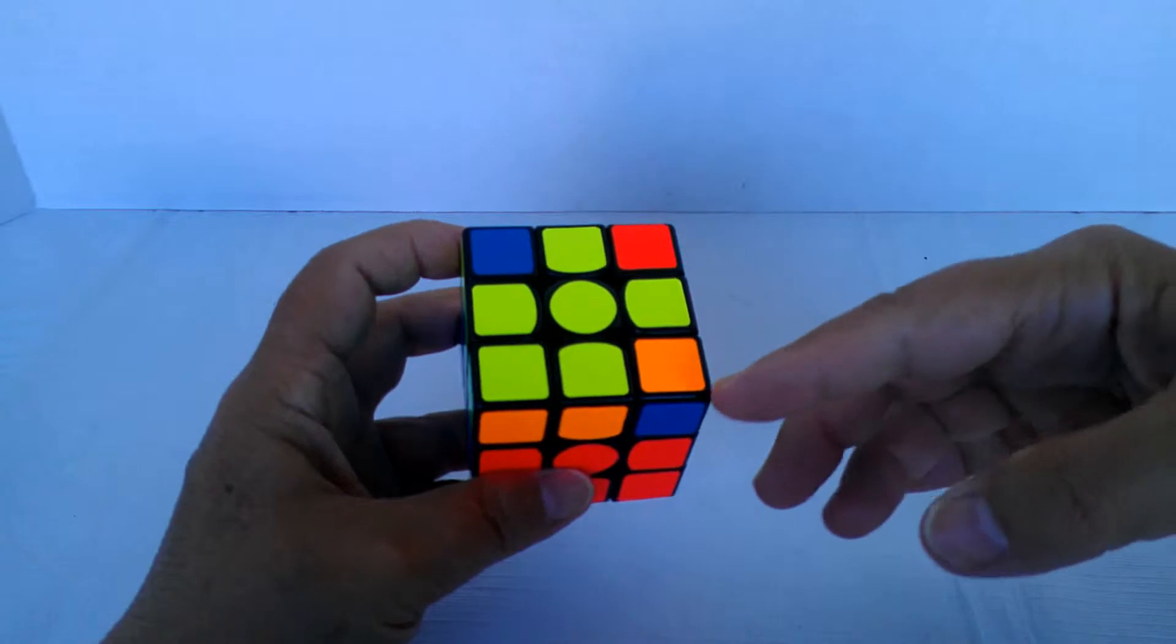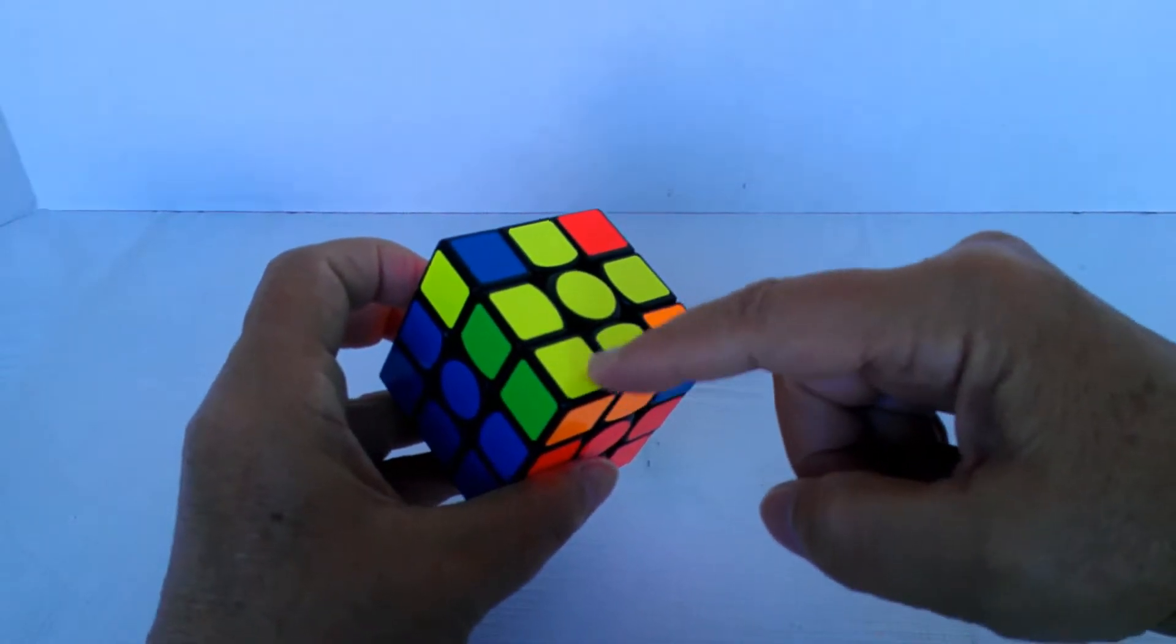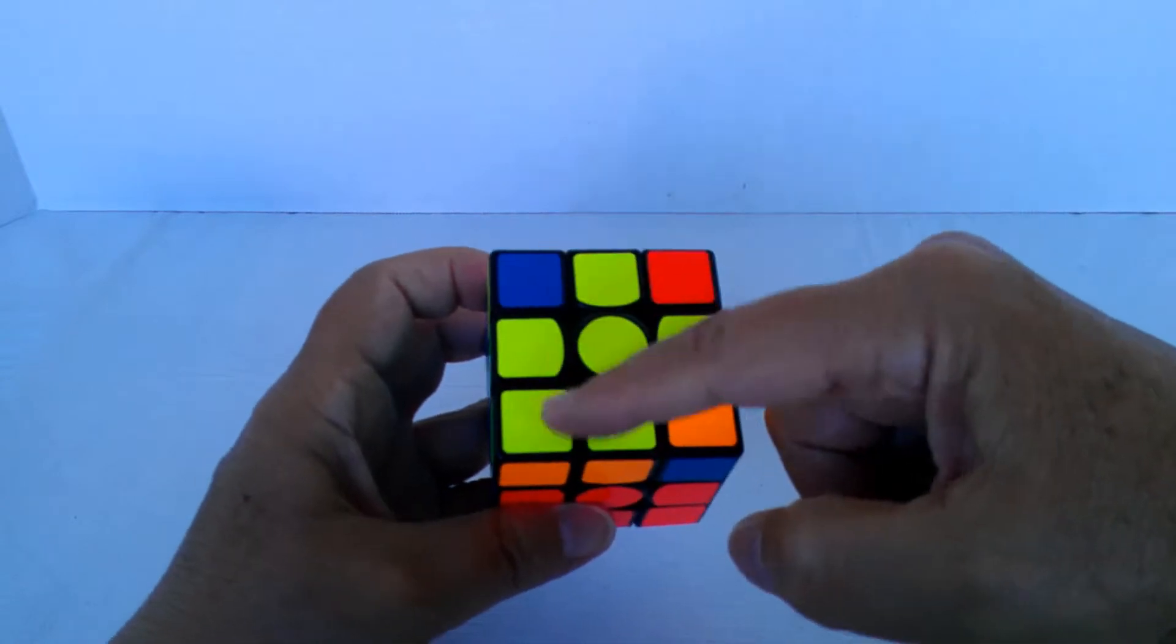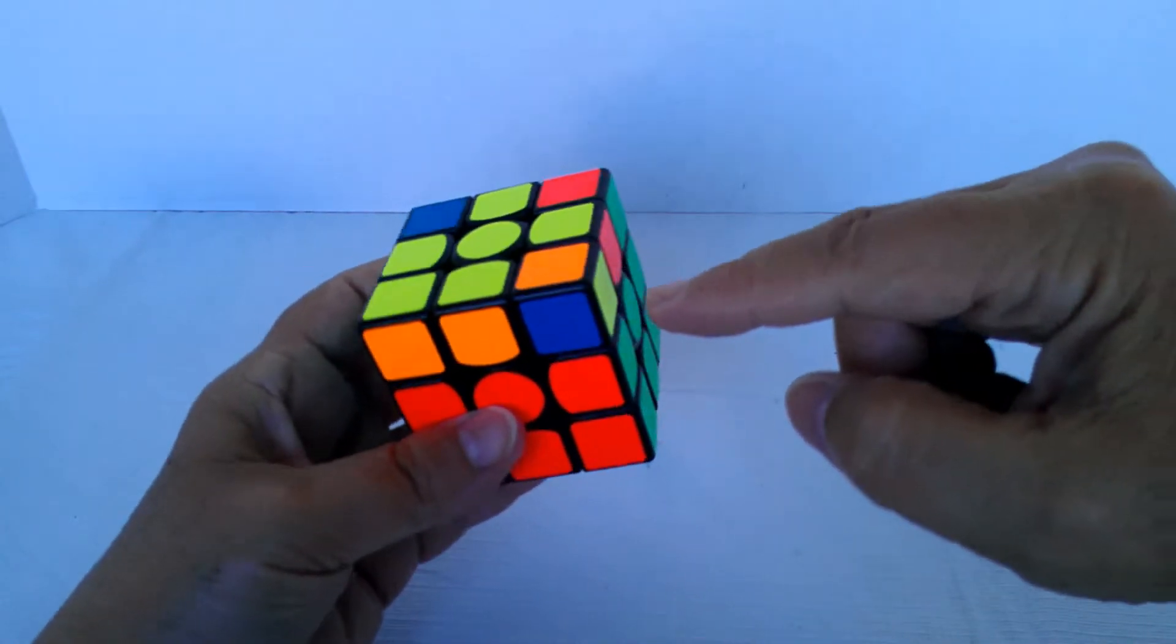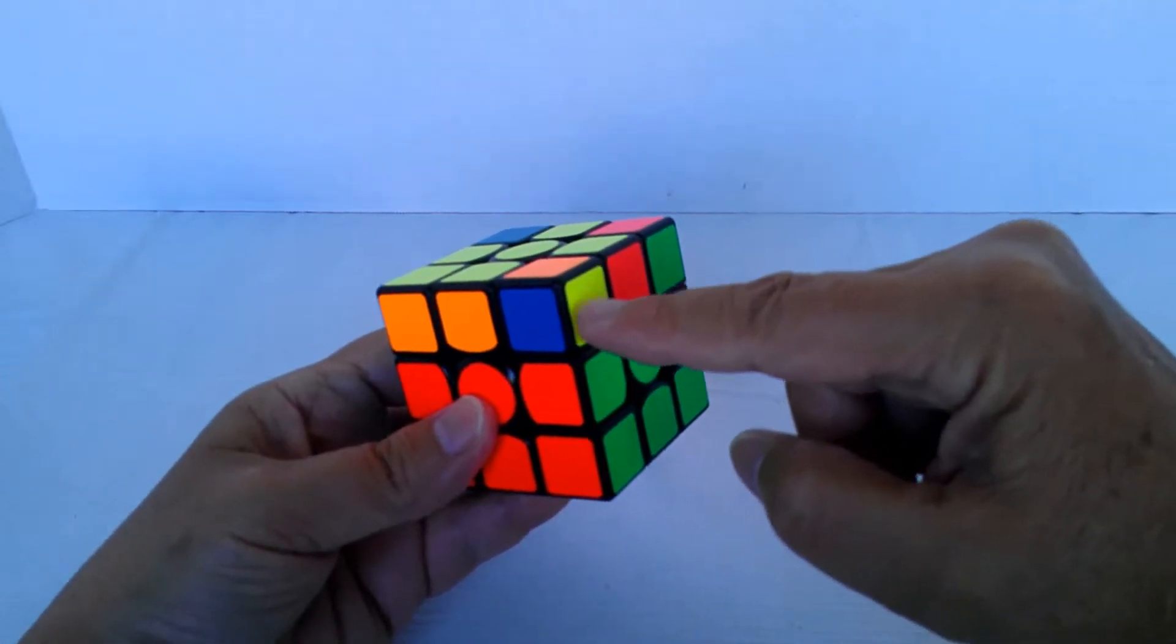The way you know it's anti-sune is if you position it so that the corner with the yellow on top is in the lower left, the yellow sticker is not facing you, but it's over at the right.